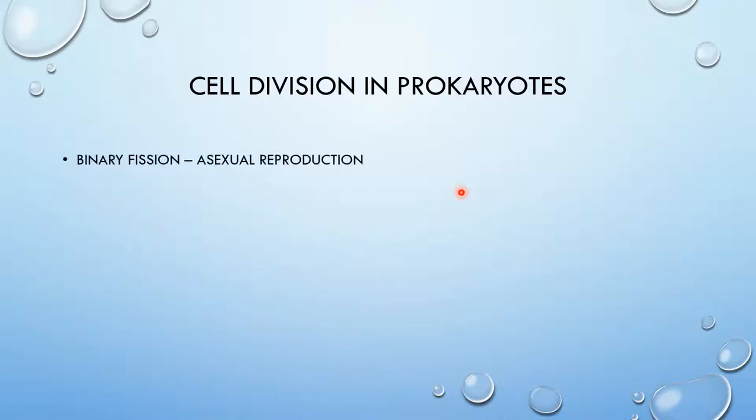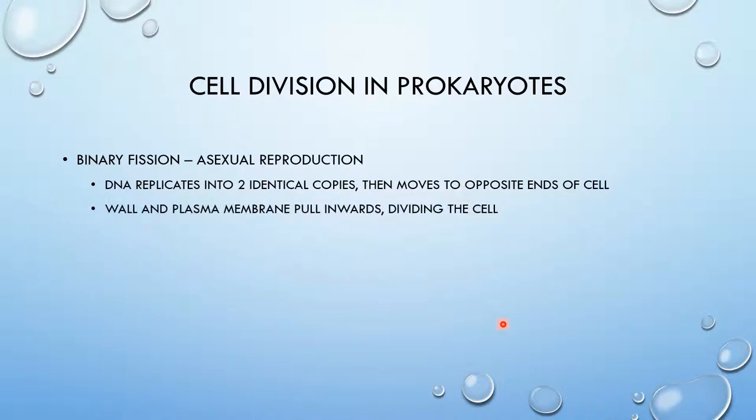Cell division in prokaryotes. Prokaryotes divide by binary fission, which is a form of asexual reproduction. Eukaryotes divide by mitosis and meiosis, but we'll go over that later in future videos. For binary fission, what happens is the DNA inside prokaryotes replicate into two identical copies that move to opposite ends of the cell. The wall and plasma membrane pull inwards, dividing the cell. Now what's formed is two genetically identical cells. Binary fission produces clones.